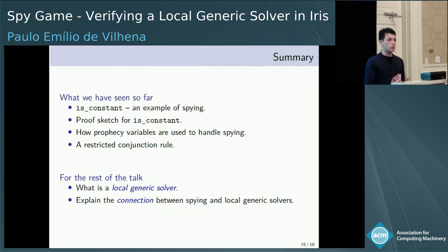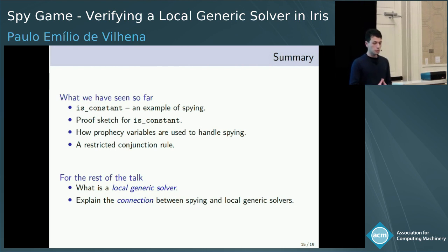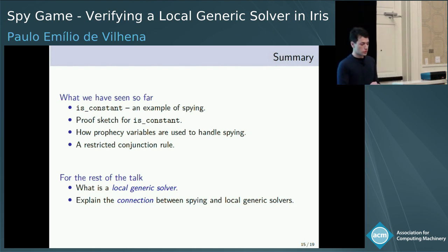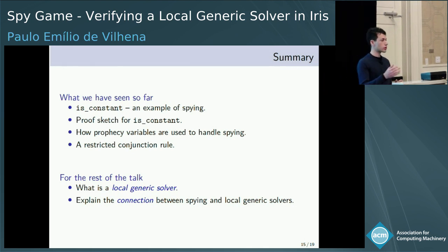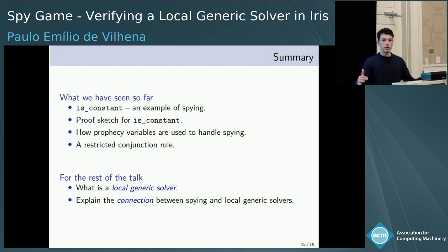Let me make a summary of what we have seen so far. I showed you the function is_constant as a simple example of spying, we saw the proof sketch, how prophecy variables are useful in the proof of is_constant, and a restricted conjunction rule. For the rest of the talk, I will briefly explain what local generic solvers are and their relation with spying.